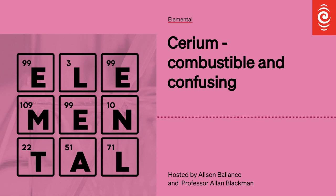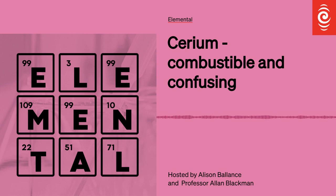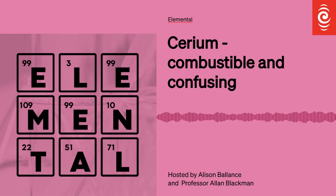It was discovered in 1803, and the reason it got its name cerium was because the first asteroid, Ceres, was discovered just a couple of years before cerium was found. And the asteroid Ceres was, for some unknown reason, named after the Roman goddess of agriculture.